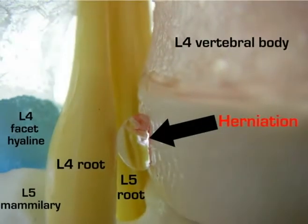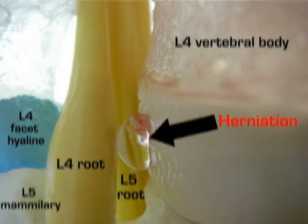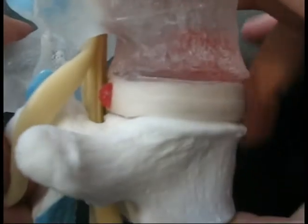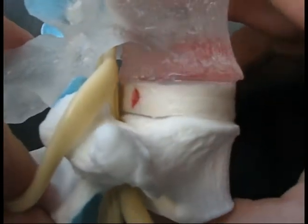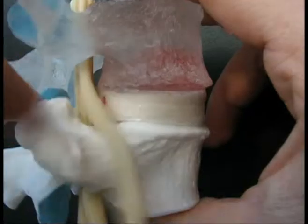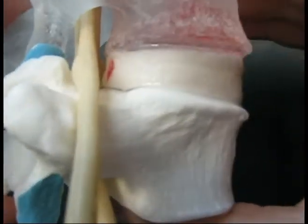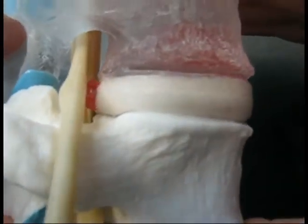The facet approximation can now be felt with the anterior disc resistance. Encroachment syndromes, laterally and centrally, can now be demonstrated.